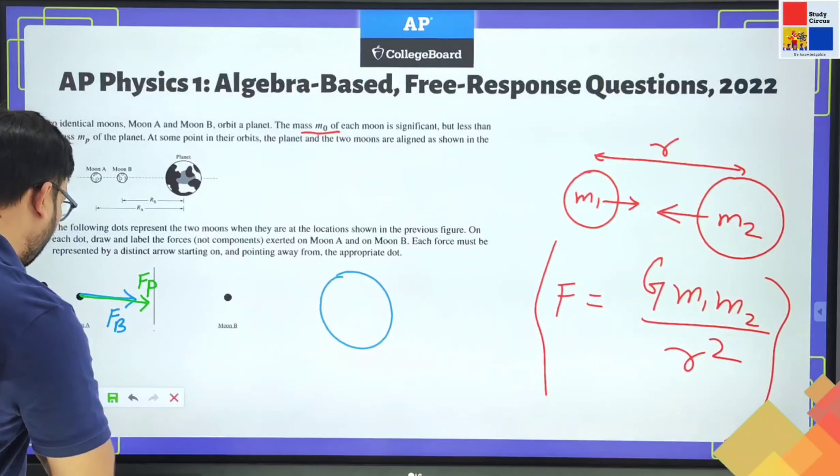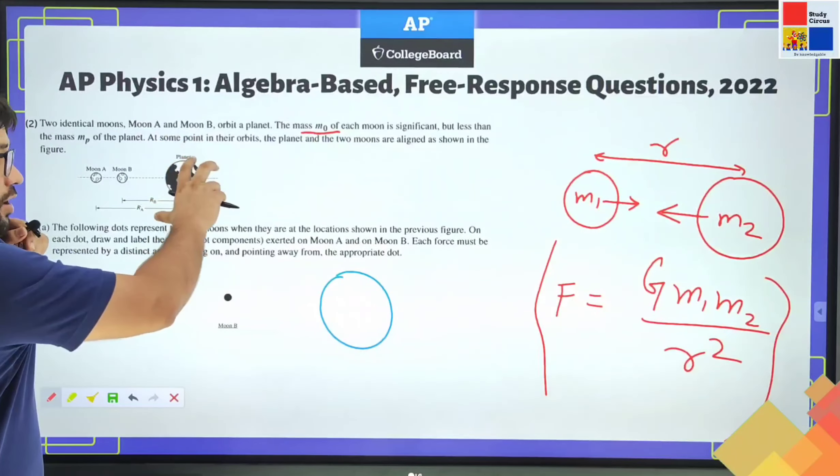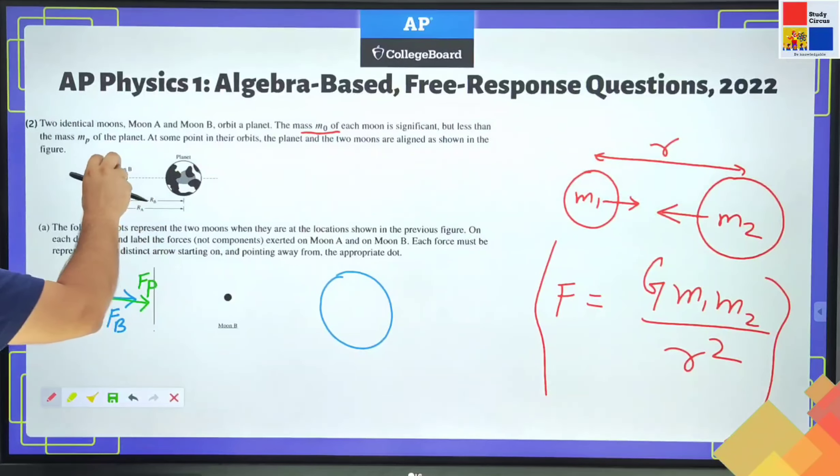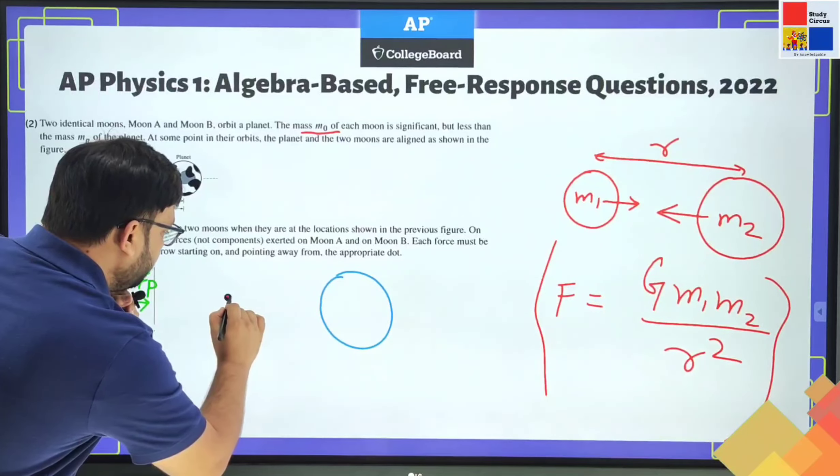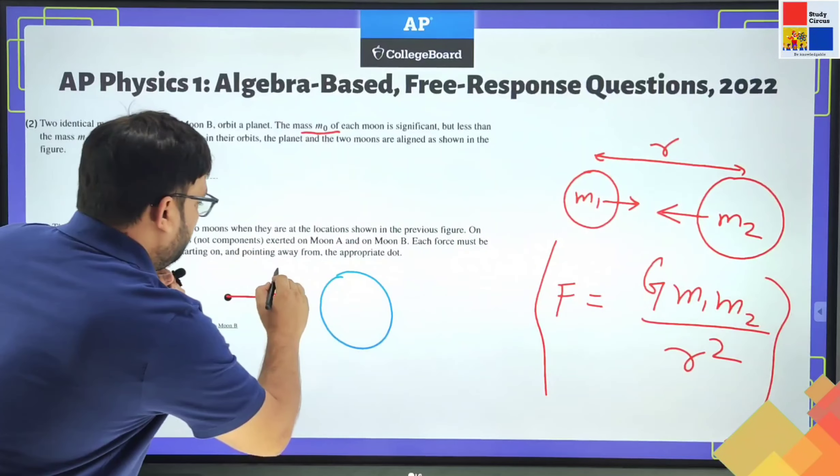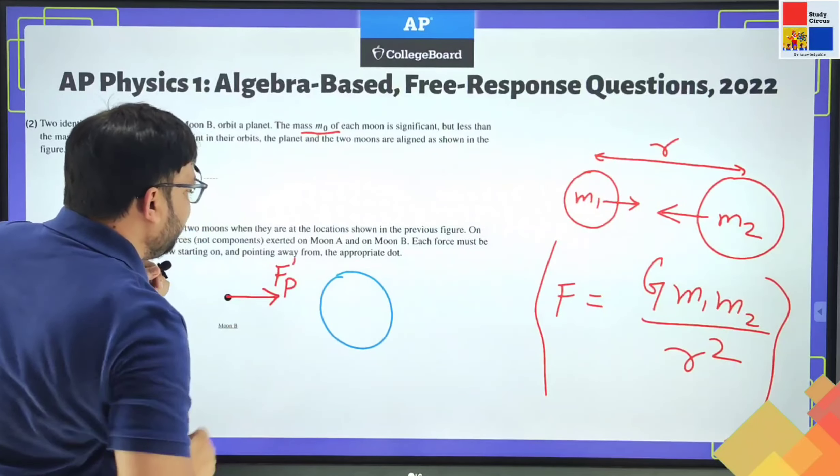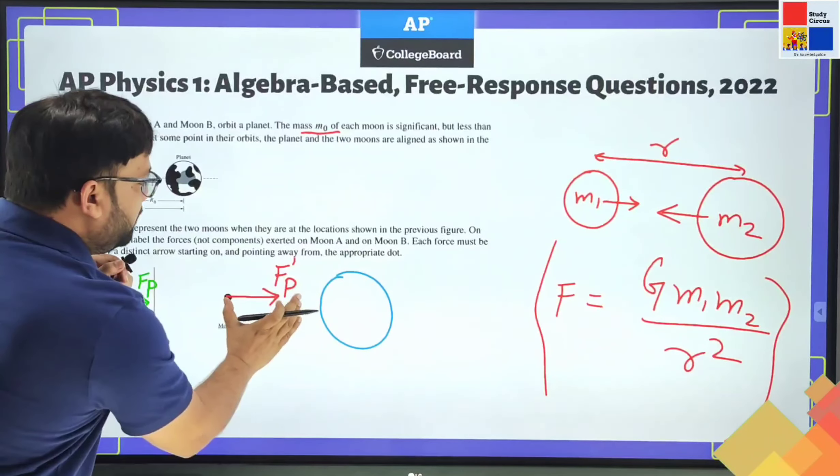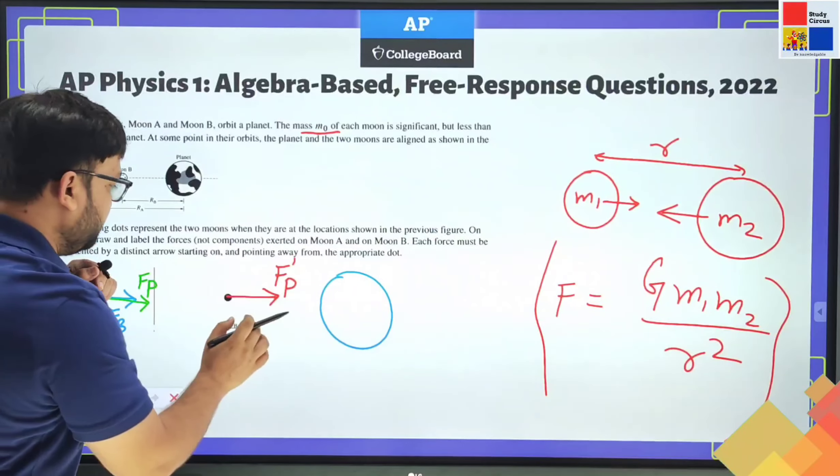Moon B, if we talk about it - again there are two forces. One is the pull of the planet and the other one is the pull of moon A. So on this one, the pull of the planet is F prime P. This is the pull of this planet onto moon B.